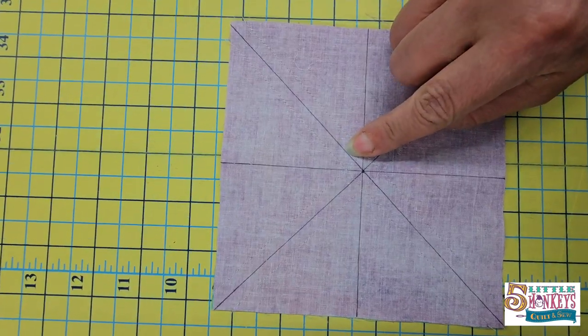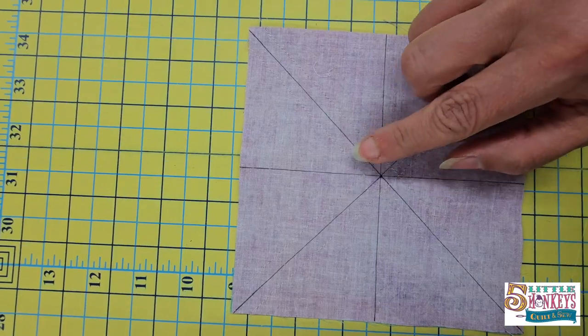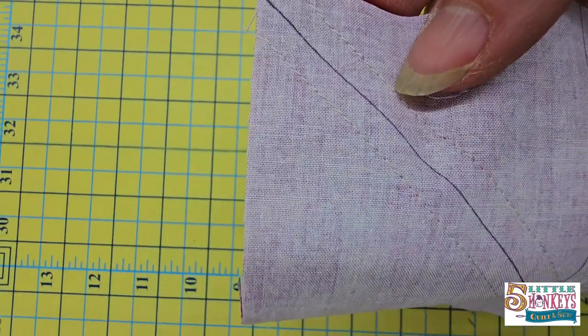So I used my quarter inch piecing foot, ran it right along the line and stitched a quarter inch to either side. See that there?